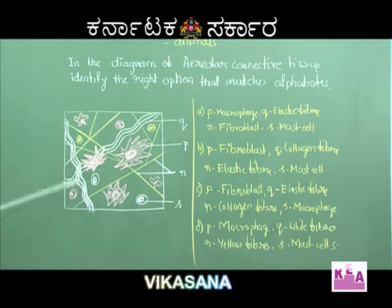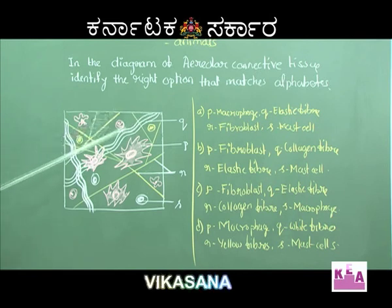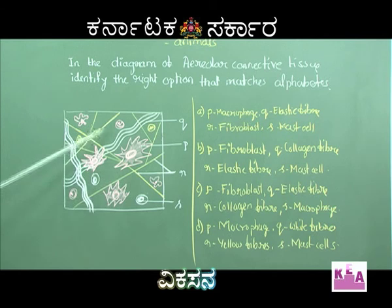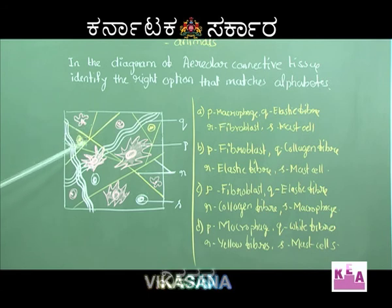The white wavy fibers are made up of collagen - they are called collagenous fibers, or white fibers. These are the wavy collagen fibers and they are found in bundles. Then coming to the yellow colored ones - they are thin, single, branched - these are called elastic fibers.